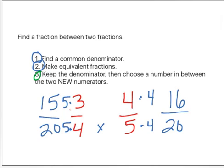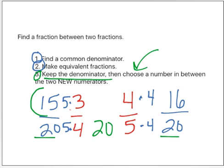Now I get to do step number three. Keep the denominator, and I'm going to use that twenty. I have to choose a number between my numerators. I need to choose a number between fifteen and sixteen. Uh-oh. There aren't any whole numbers between fifteen and sixteen, so that's not going to work. That's what makes this question a challenge.